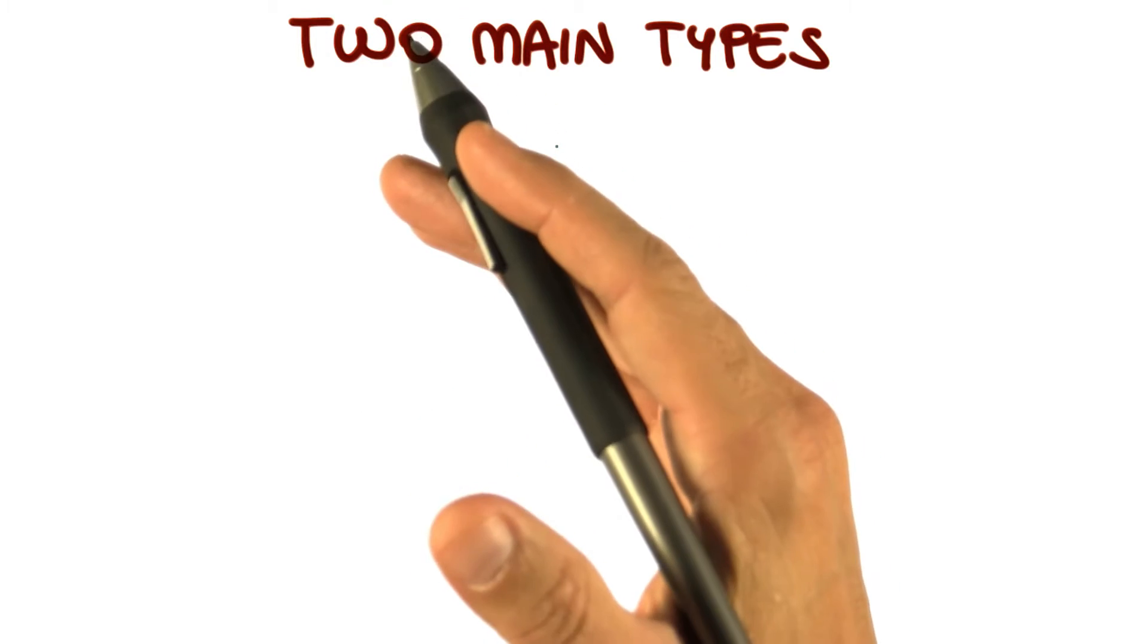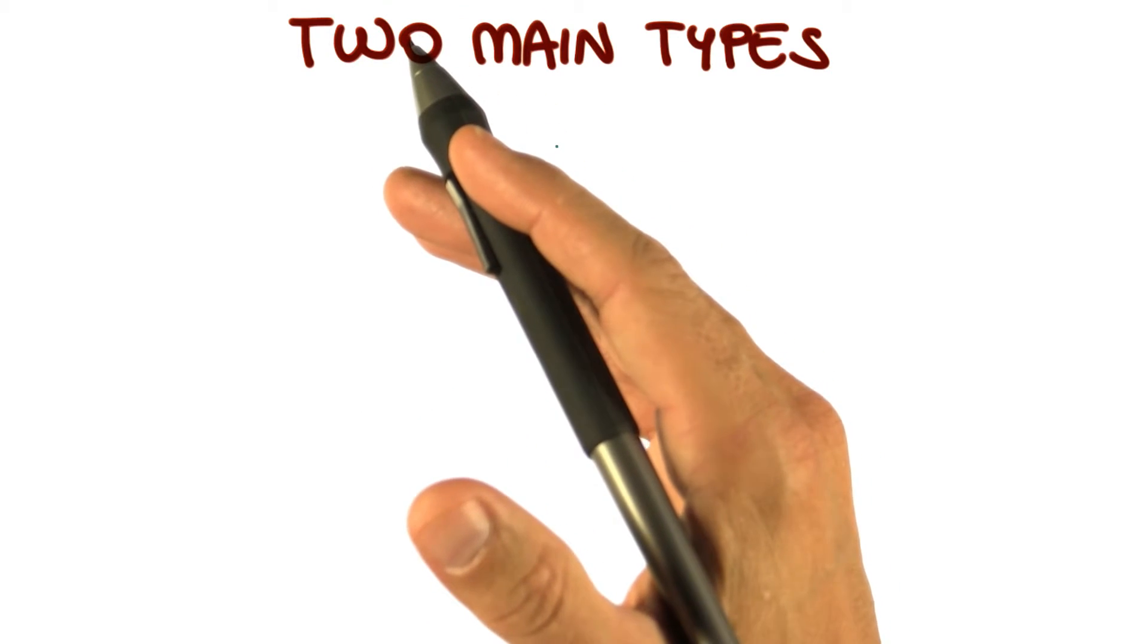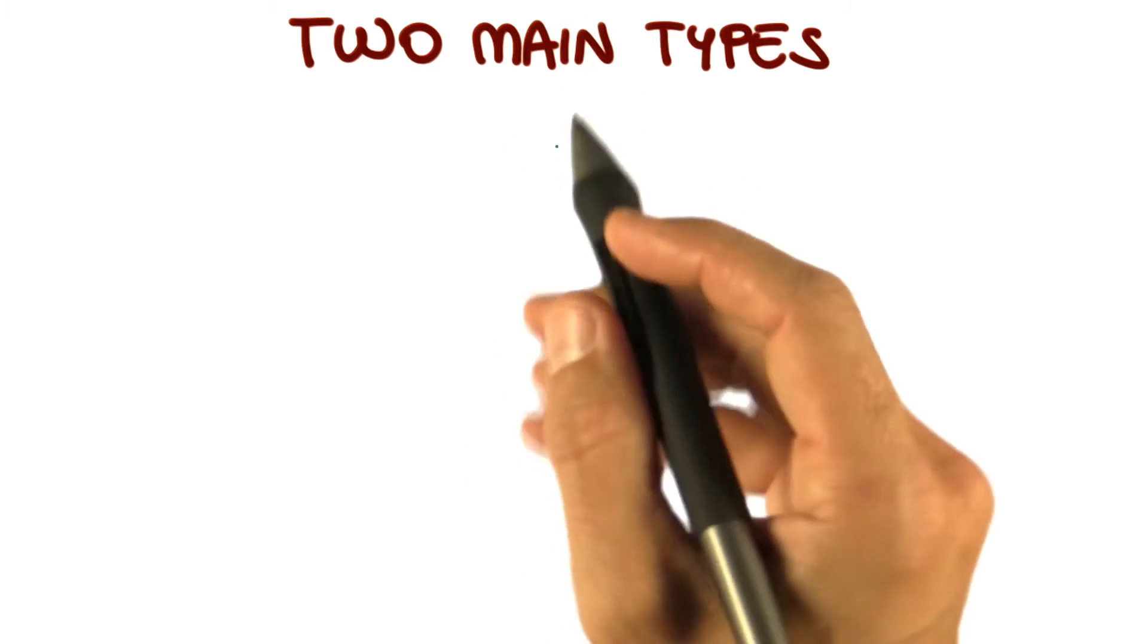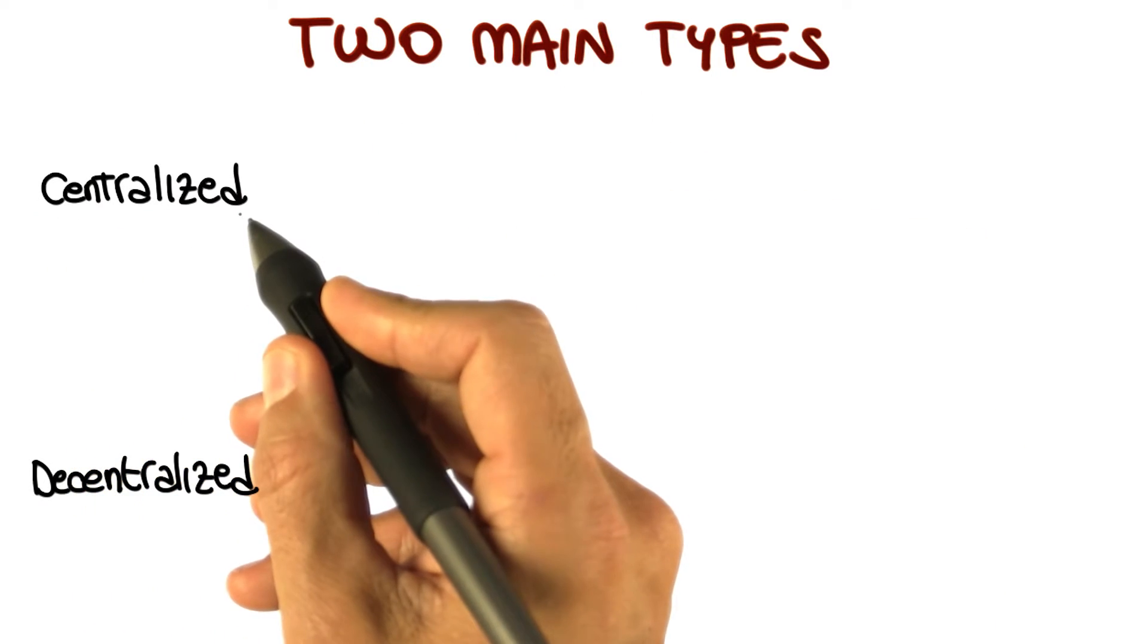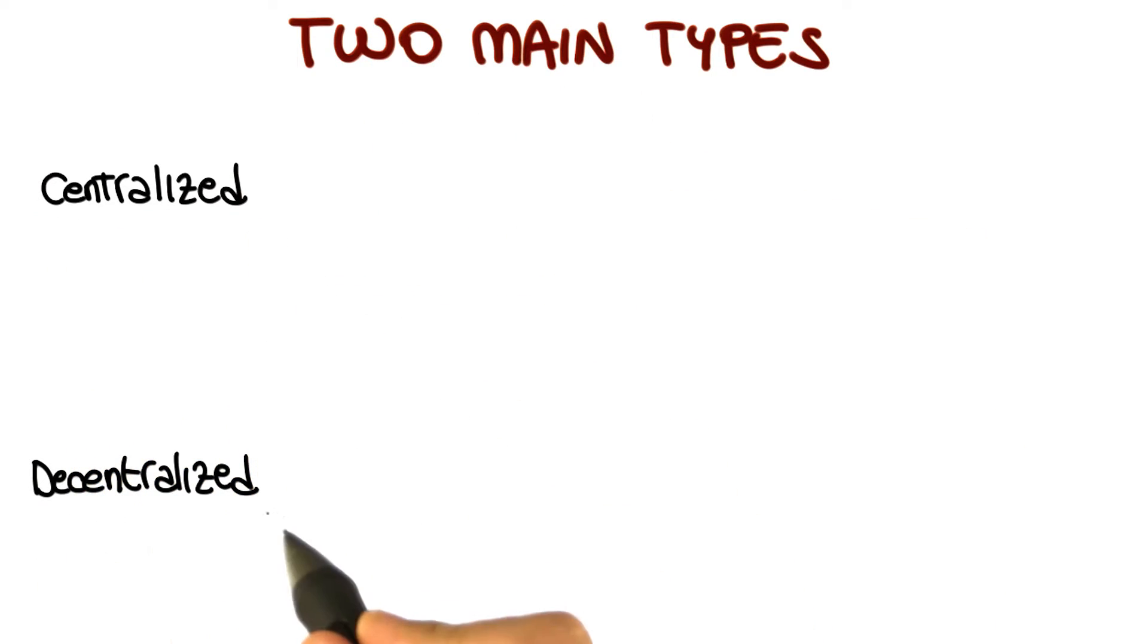Something else I want to mention is that there are many different version control systems. But we can classify them normally in two main types, centralized VCSs and decentralized VCSs.